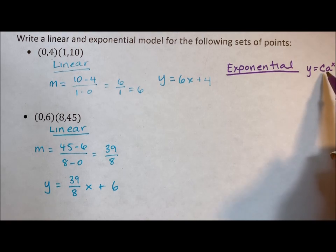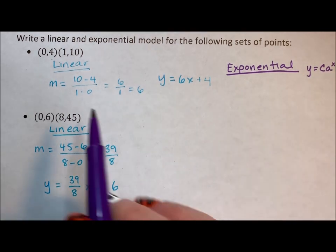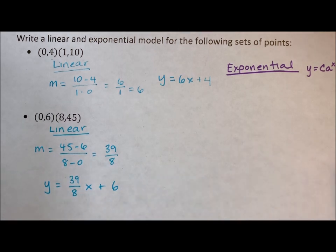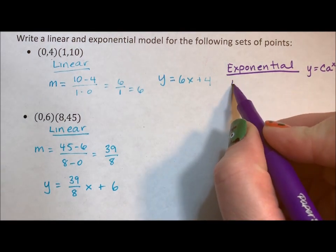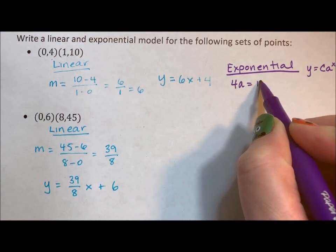So again, c like b is our y-intercept. So again, we have our initial, so we're only looking for a. We're trying to figure out what we multiply to move forward.